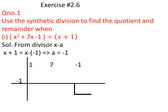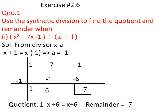We write the first term, 1, as it is under the horizontal line. We multiply 1 by -1, which gives -1, and write this product under the number 7. Adding both terms gives 6. Now we multiply 6 and -1, which gives -6. We write -6 under the number -1, and adding these terms gives -7. Since -7 is the last term, it is the remainder. The other two terms give us the quotient: 1·x + 6 = x + 6. So the quotient is x + 6 and the remainder is -7.